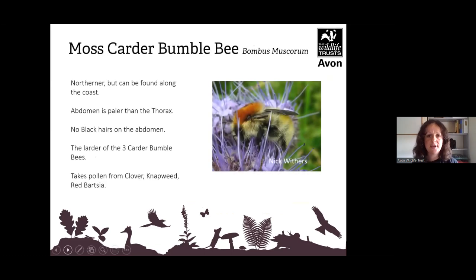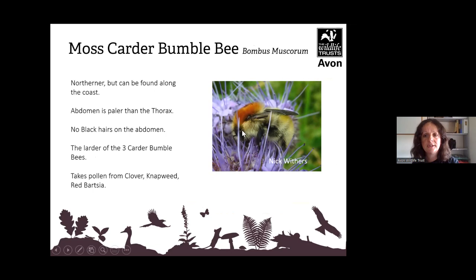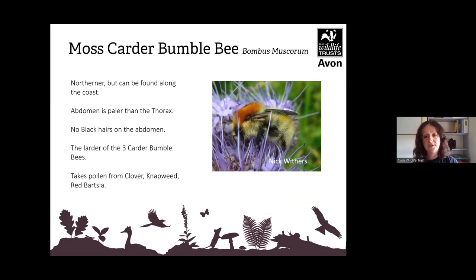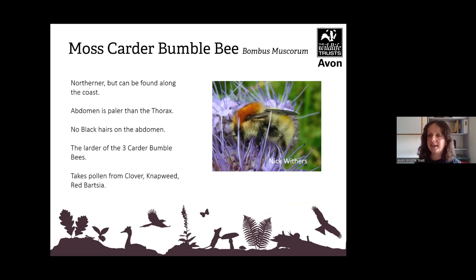The moss carder bumblebee, Bombus muscorum, is quite yellowy in colour with a very ginger thorax. They are mainly found in northern areas like Manchester and Nottingham, but you do see them here along the coast. They have no black hairs on the abdomen and are the largest of the three carder bumblebees. They also like clover, knapweed and red bartsia.